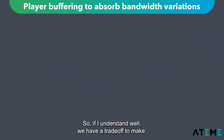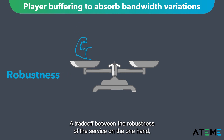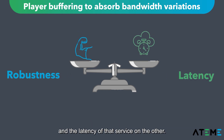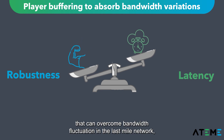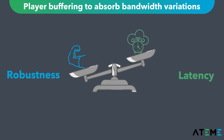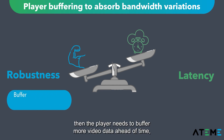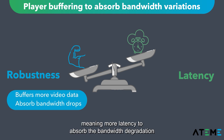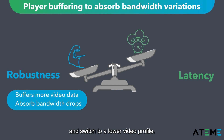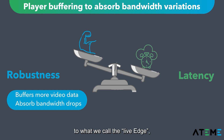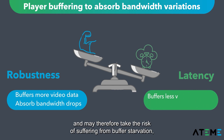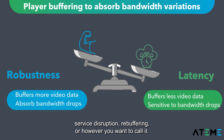So we have a trade-off to make — a trade-off between the robustness of the service on one hand and the latency of that service on the other. If we prioritize a solid and steady service that can overcome bandwidth situations in the last mile network, then the player needs to buffer more video data ahead of time, meaning more latency. If we prefer to have a video service as close as possible to the live edge, then the player will need to buffer as little data as possible and may therefore risk suffering from buffer starvation, service disruption, or rebuffering.